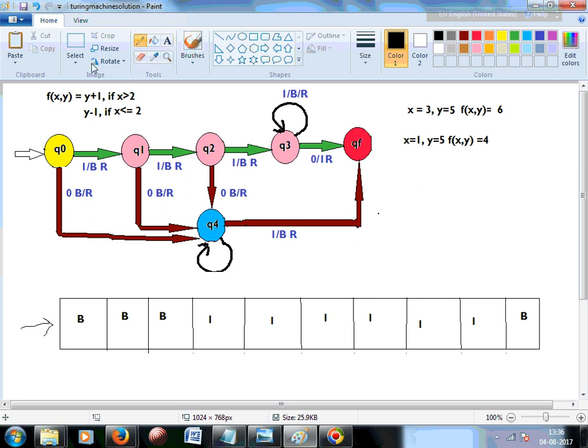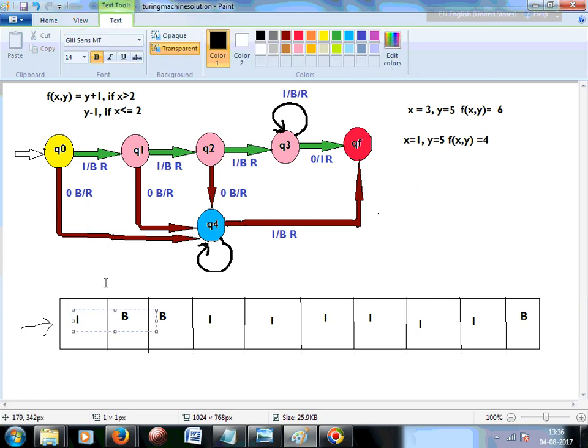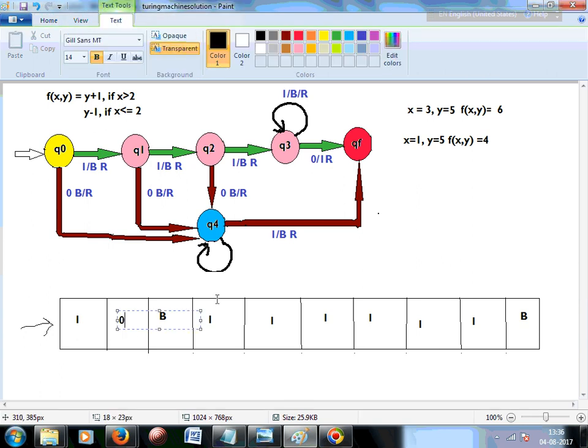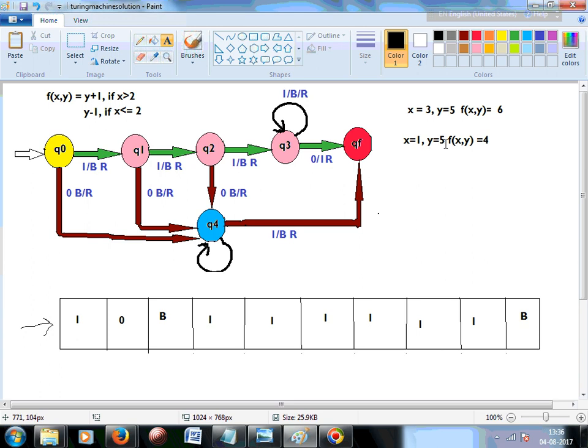So initially we will have x is equal to 1, right? And followed with a 0 to represent x is equal to 1. Thereby, after that, we have to put 5 ones. So let's put 5 ones: 1, 2, 3, 4, 5. After this, this should be blank, this should be blank. And this is what your second problem represents. X is equal to 1 and y is equal to 5.